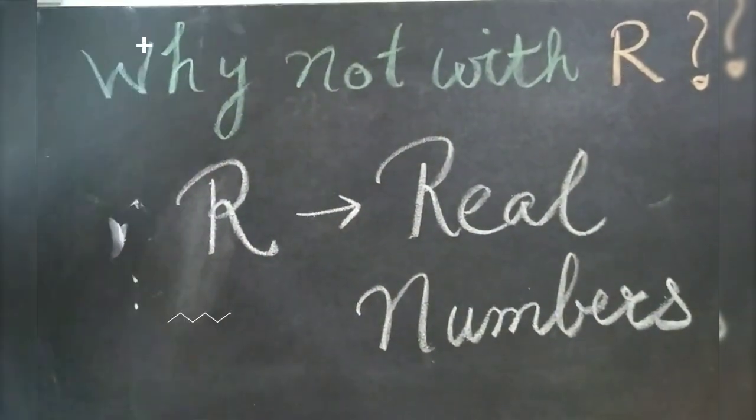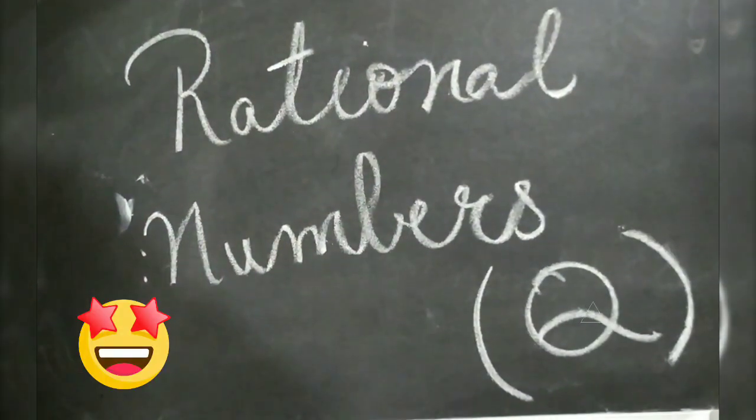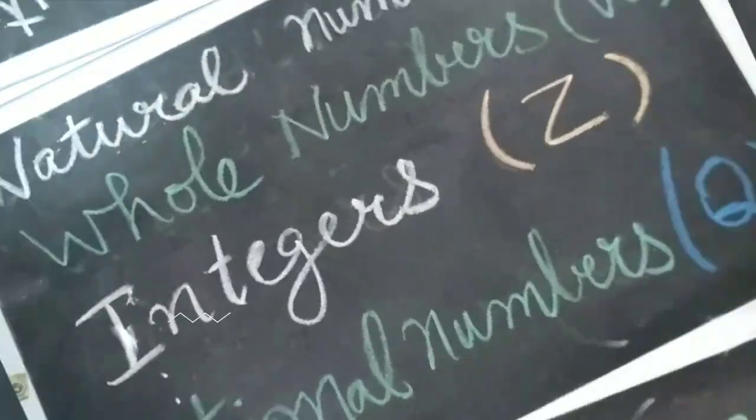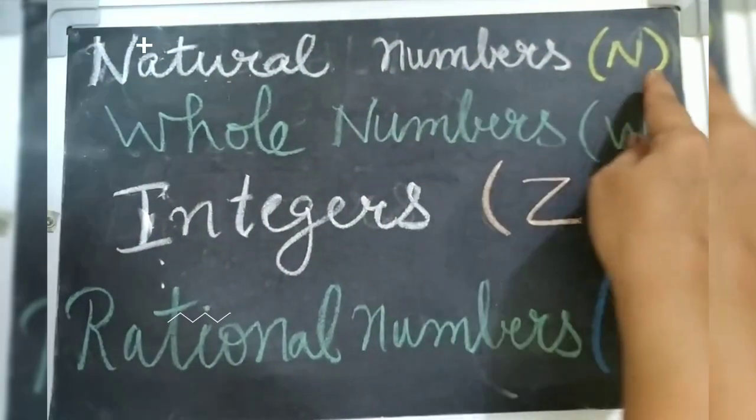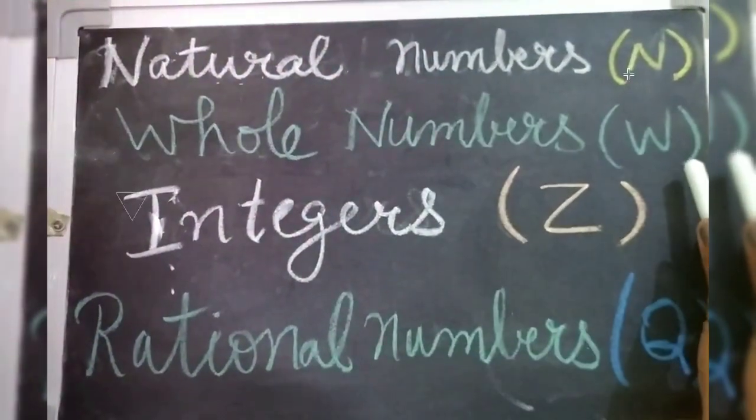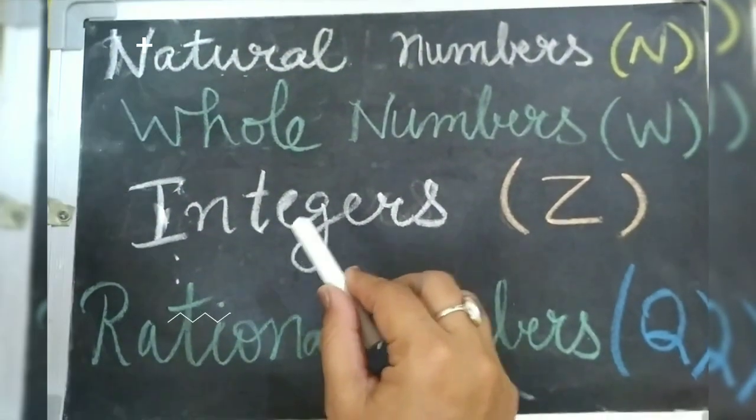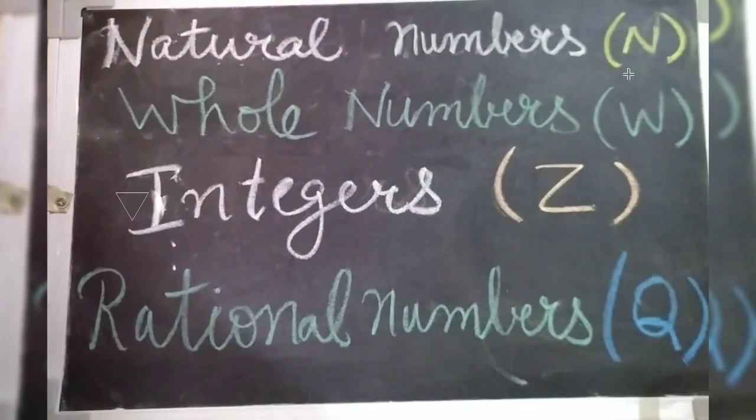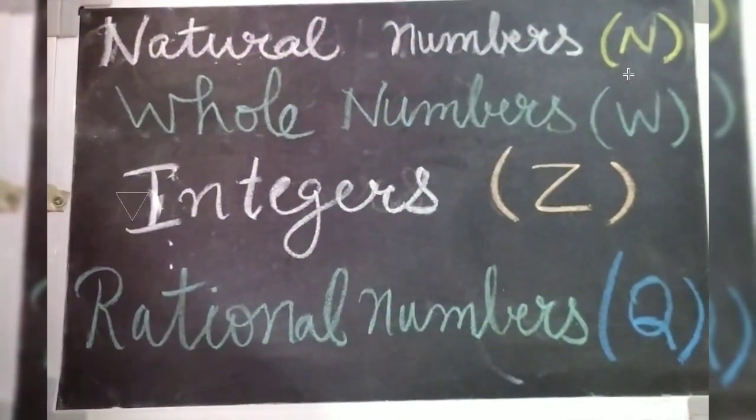So that is the reason we represent rational numbers by Q. So let's revise it one more time: natural numbers are represented with N, whole numbers are represented with W, integers are represented with Z, and rational numbers are represented with Q.